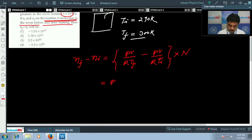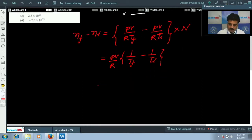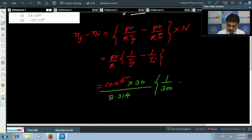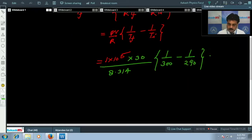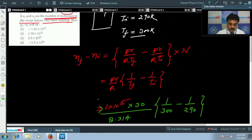So if I take PV by R as a constant, 1 upon final temperature and 1 upon initial temperature. If I put the given values: pressure is 1 into 10 to the power 5, volume is 30, and gas constant is 8.314, times 1 by 300 minus 1 upon 290. After solving you will get option number 4.